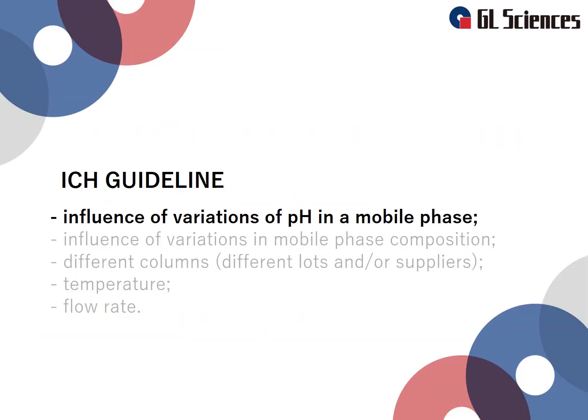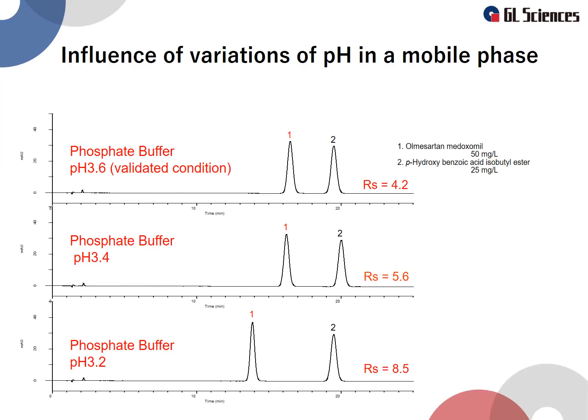In this video, we will explain the influence of variations of pH in a mobile phase. There are many troubles caused by mobile phase pH in inquiries we received. Here you find three chromatograms made with different mobile phases with a pH difference of 0.2. As you can see, this small difference creates large retention time differences, even when using a buffer. In this particular example, the system suitability test might have a negative result, especially when the resolution has to be a value of 5 or higher.